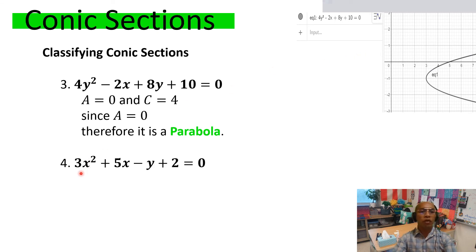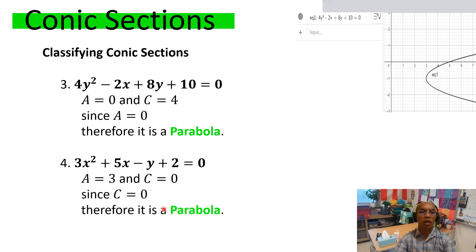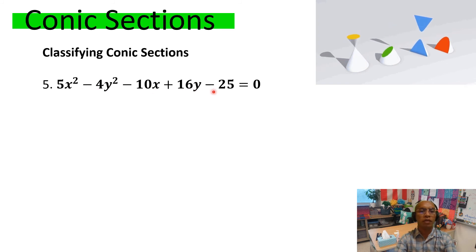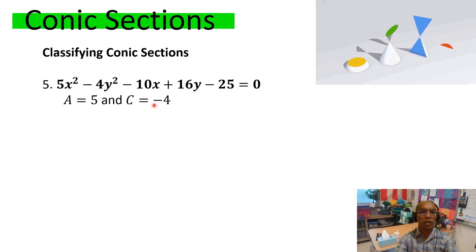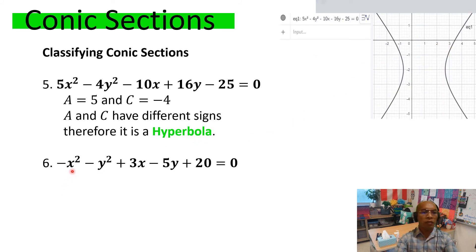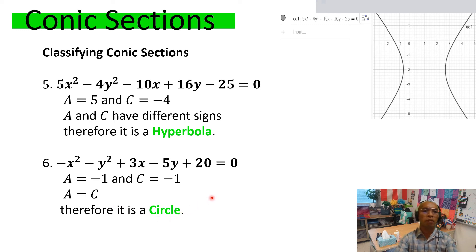Example 4: 3x² + 5x − y + 2 = 0. A equals 3 and there is no y² term, so C is zero. This equation is an equation of a parabola. Example 5: 5x² − 4y² − 10x + 16y − 20 = 0. The coefficient of x² is positive 5, and the coefficient of y² is negative 4. They are opposite in sign, so this is an equation of a hyperbola. Example 6: −x² − y² + 3x − 5y + 20 = 0. A is negative 1 and C is also negative 1. They are equal, therefore this is an equation of a circle.